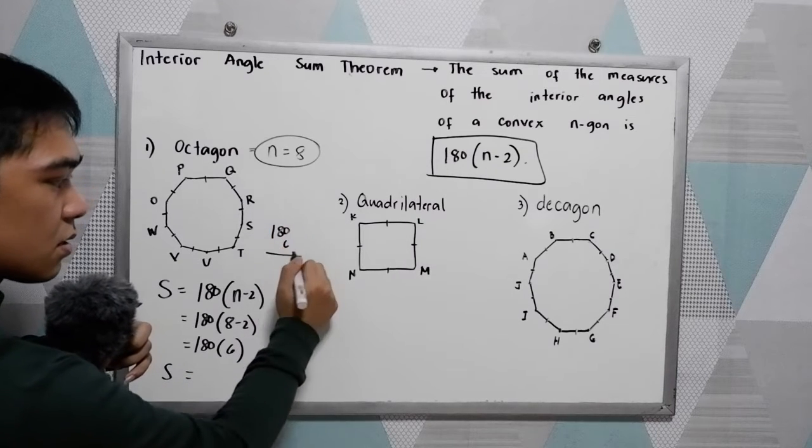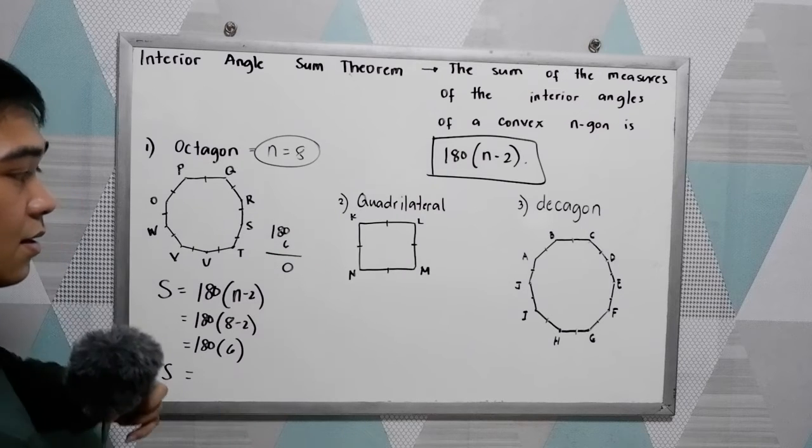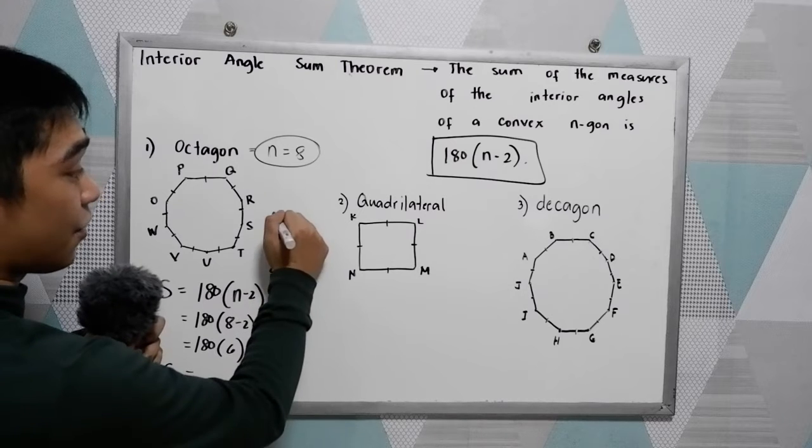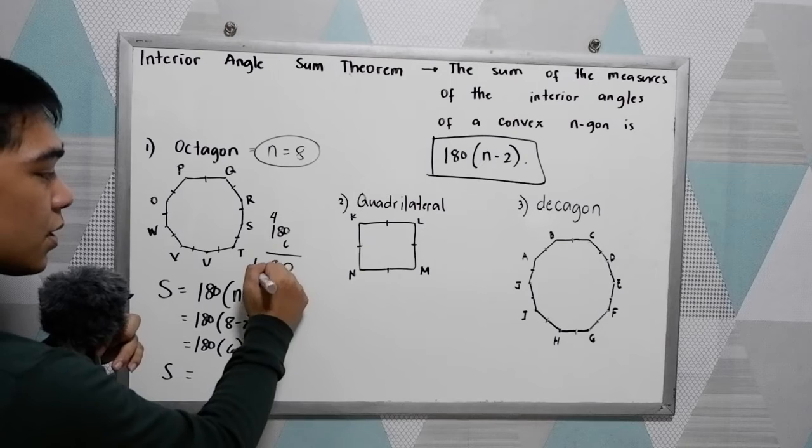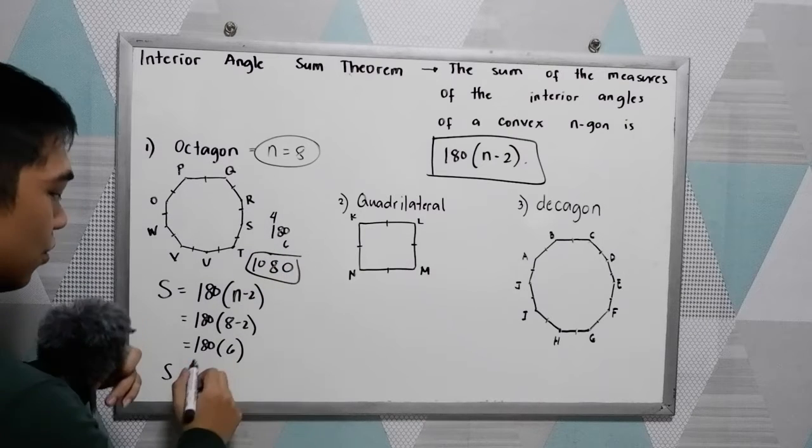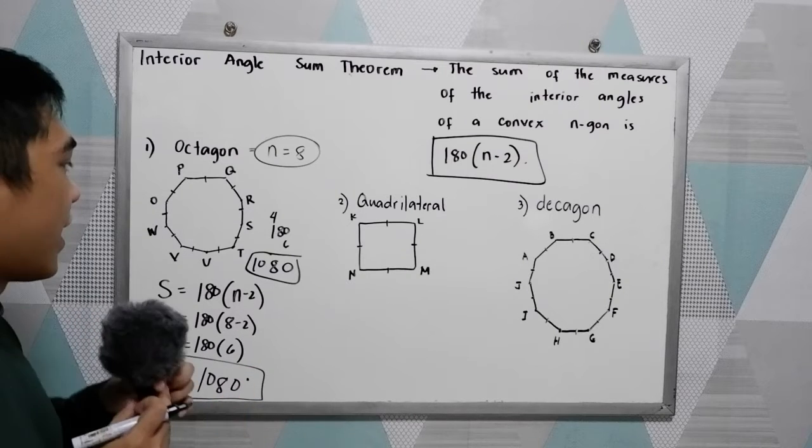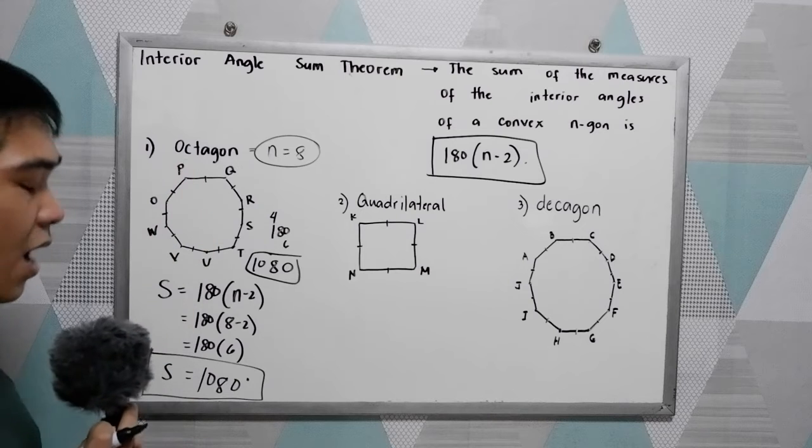So 180 times 6. 6 times 0, that is 0. 6 times 8, that is 8, 16, 24, 48. Carry 4. 6 times 1, that is 6, plus 4, that is 10. So the sum total is 1080 degrees. So the sum of all the angles in our octagon is 1080.